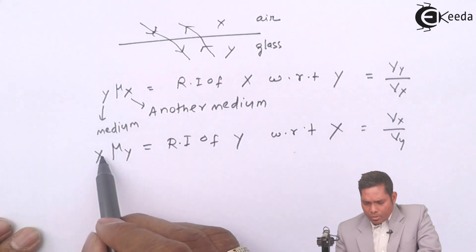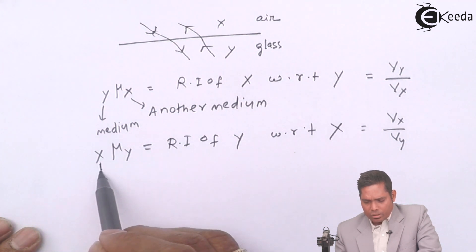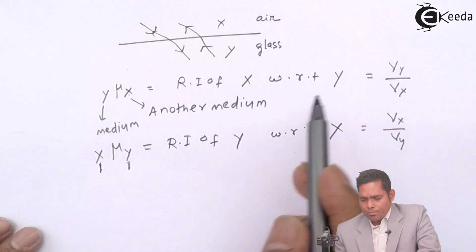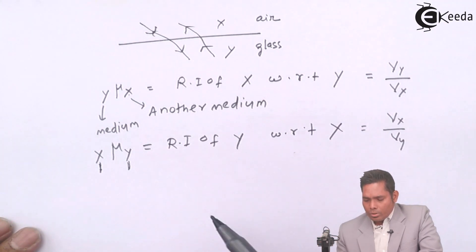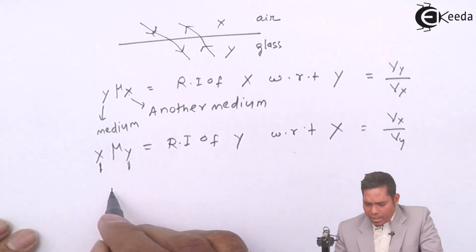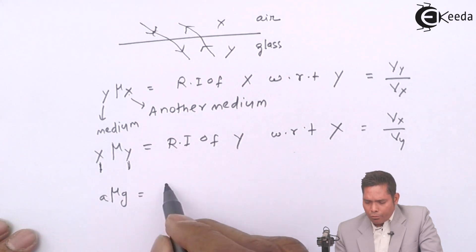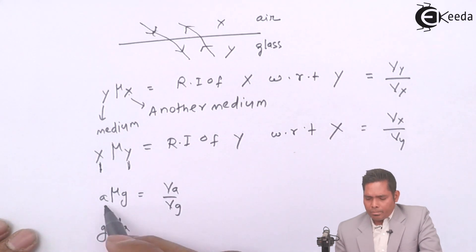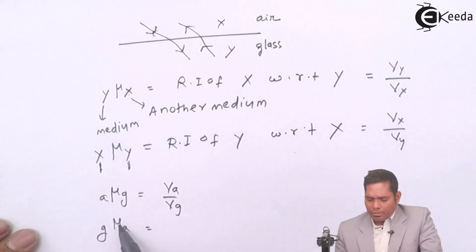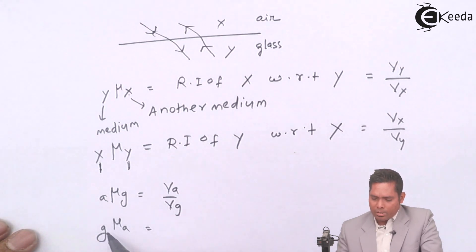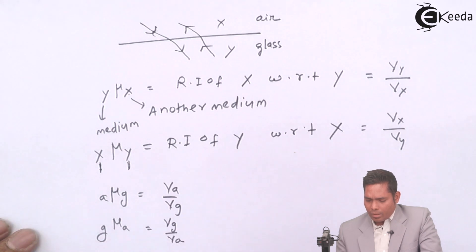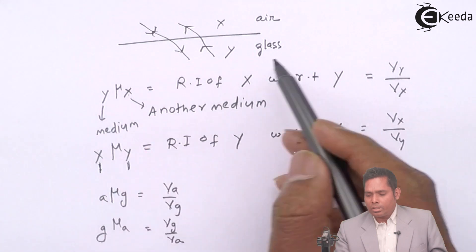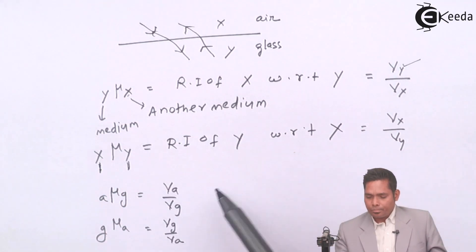In this expression, the velocity of whichever medium is written second is taken first in the numerator. So for mu_xy: velocity in y divided by velocity in x. For mu_yx: velocity in x divided by velocity in y. So mu_ga equals velocity in air divided by velocity in glass.